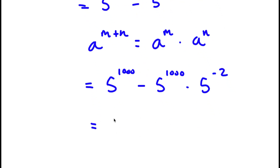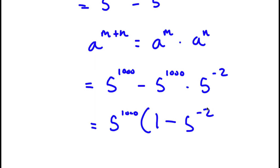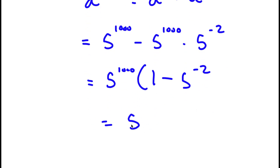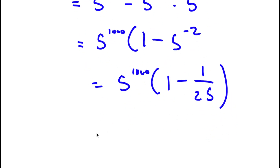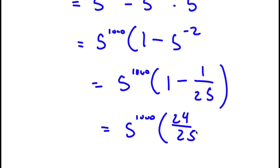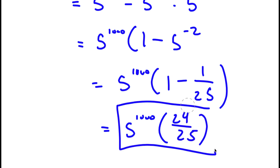From here, I can factor out 5^1000. So I have 5^1000 times (1 - 5^(-2)). This is the same as 5^1000 times (1 - 1/25). And 1 - 1/25 equals 24/25. So I get 5^1000 × 24/25. So this is my answer.